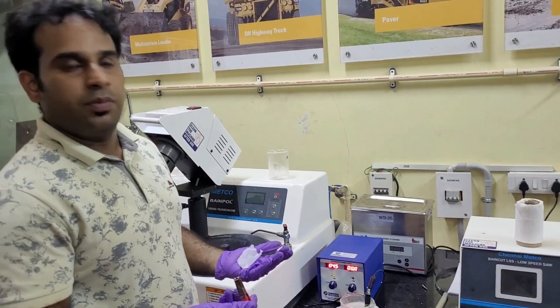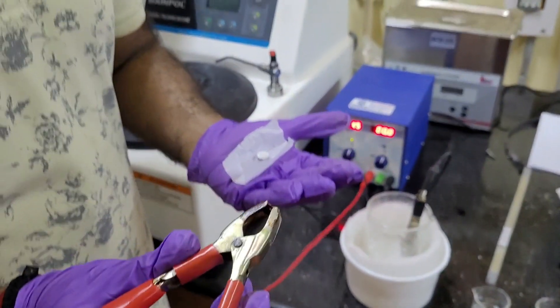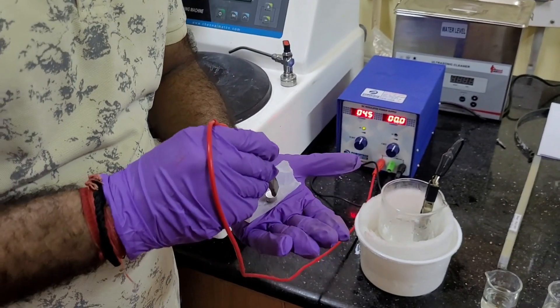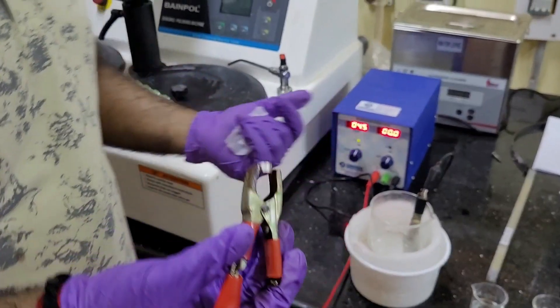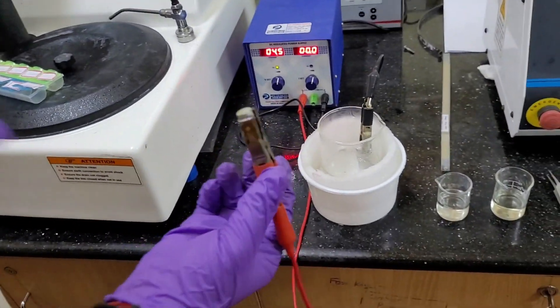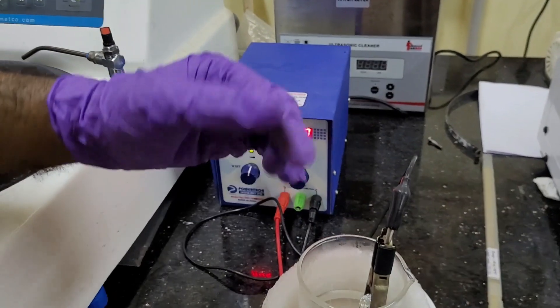Now, the next step of this electropolishing is, we have to hold the sample by using this kind of clips. And this is known as the anode. This is made as anode. So, now, before doing the electropolishing, the very important step is to optimize the electropolishing parameters.